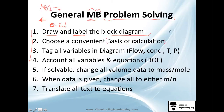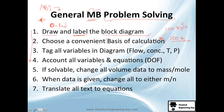Next, choose a convenient basis of calculation. If not given, use something like 100 kilograms per hour — 100 is good because it gives you 100%. You can use any amount depending on the case, and in the problem section you will see many examples of how to choose a basis and why. Then tag all the variables in the diagram — don't let any flow, concentration, temperature, or pressure go unlabeled.